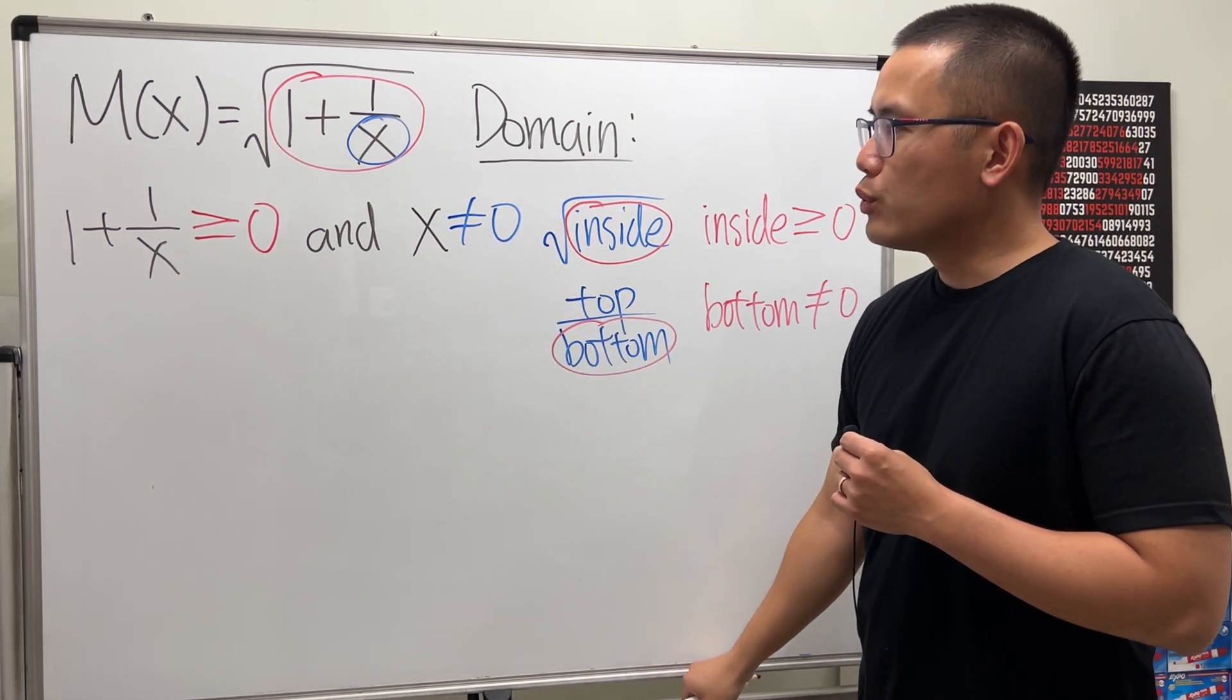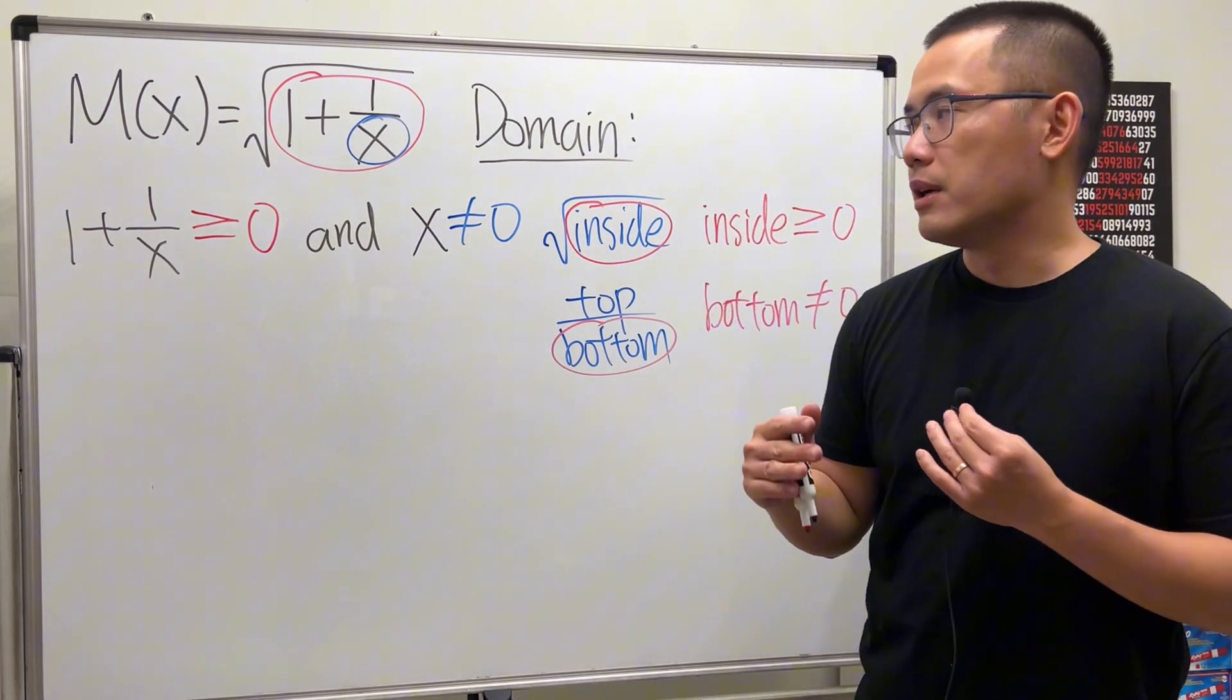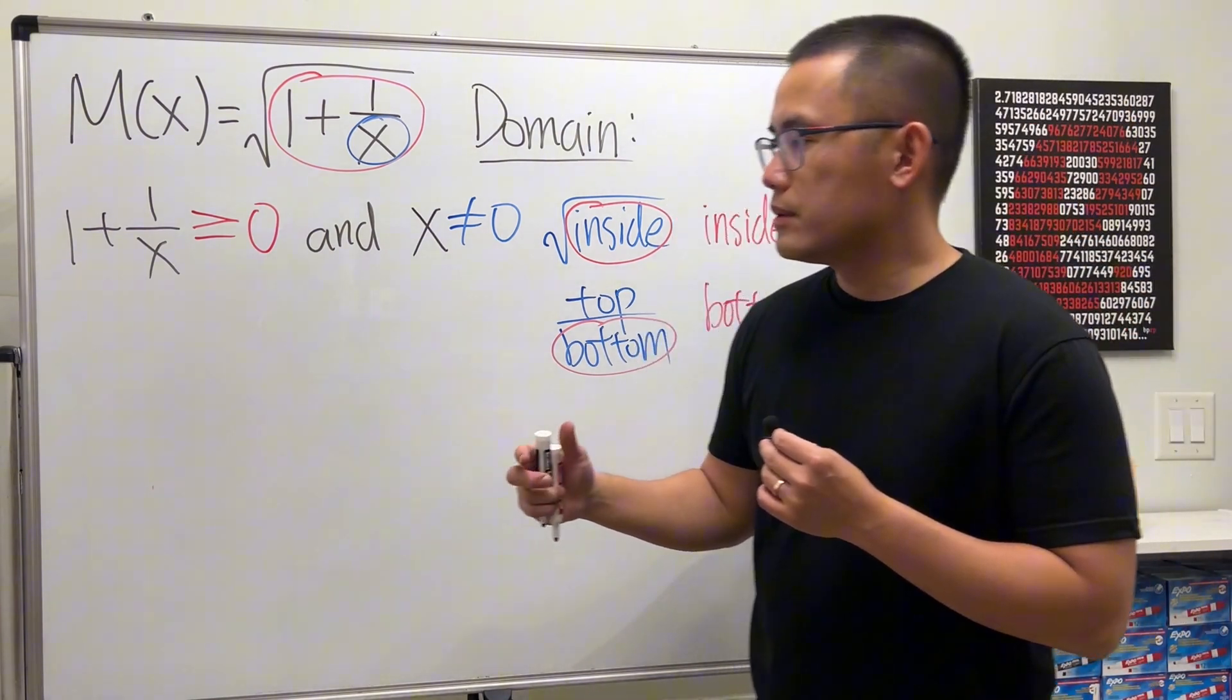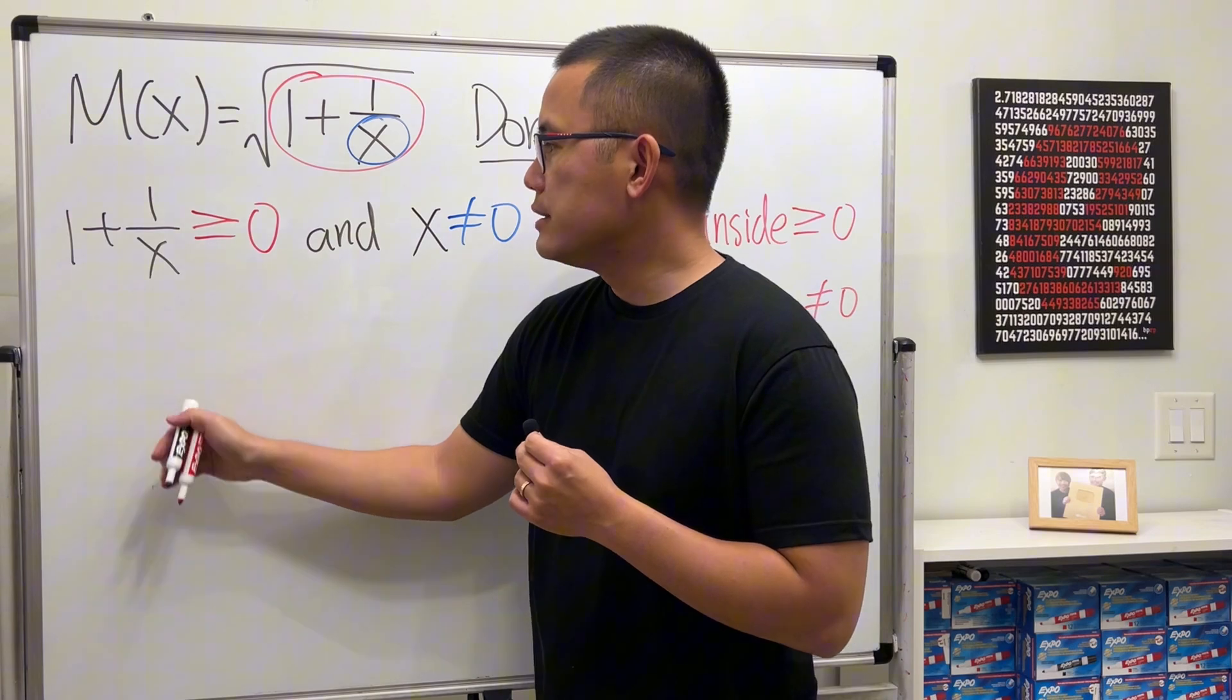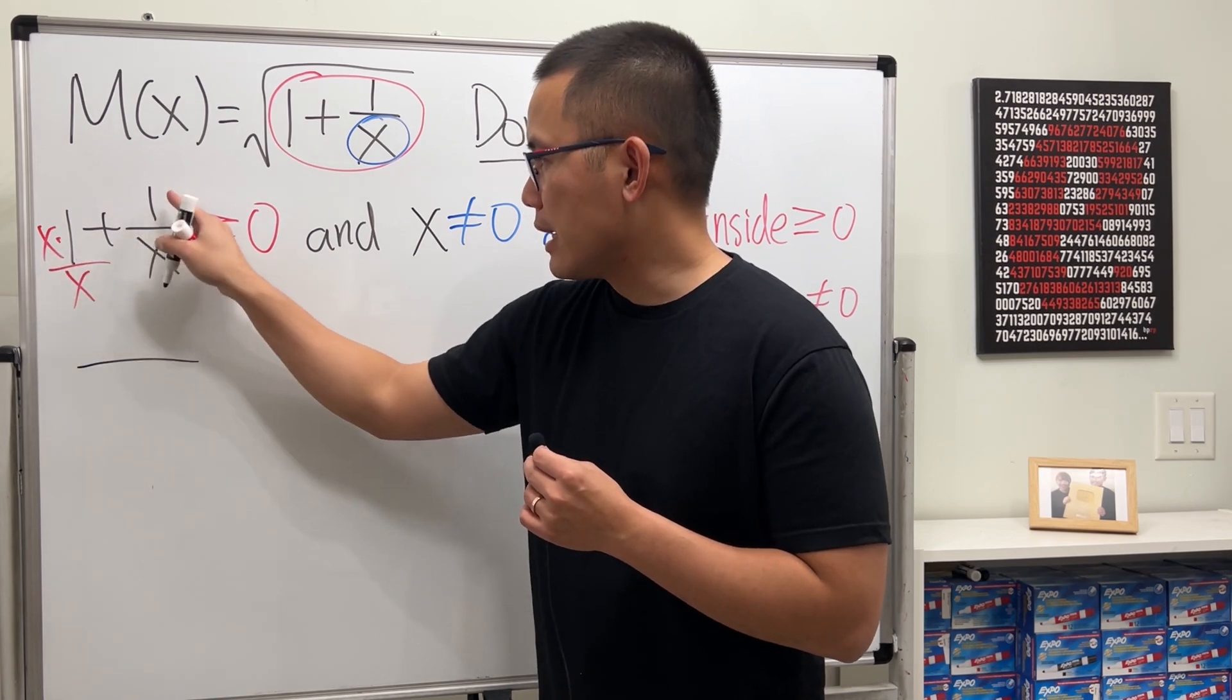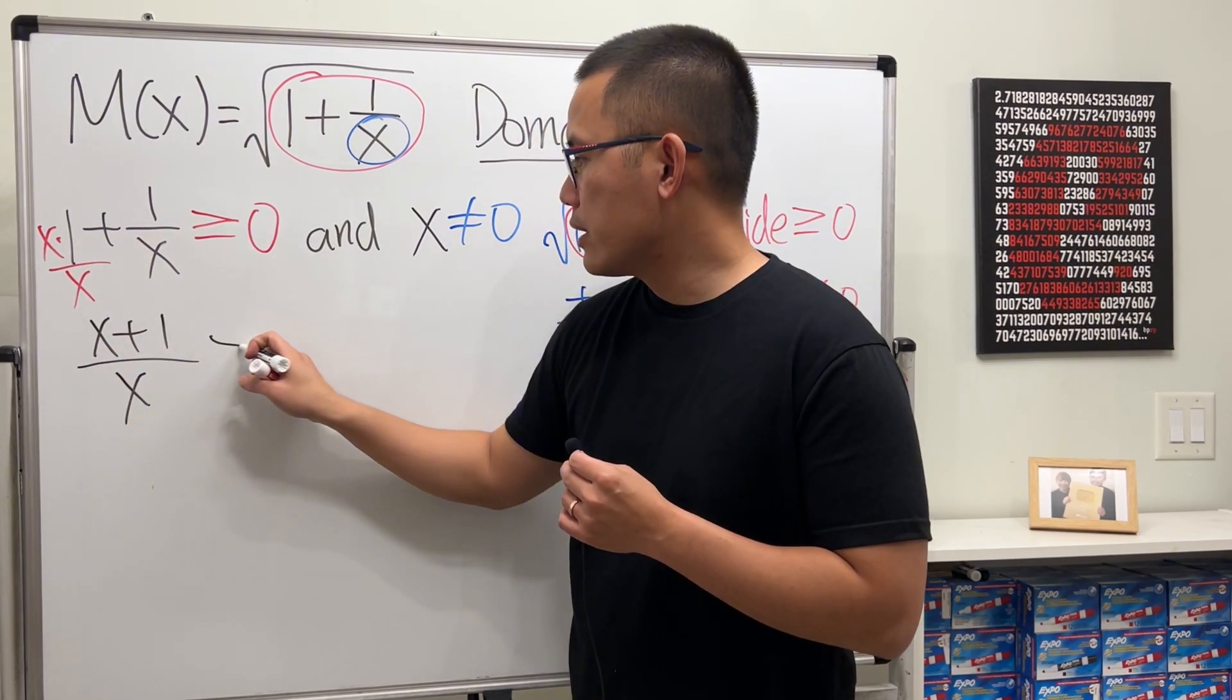And now we just have to work out these two inequalities, and then that will give us the domain. To do that, let's just combine the fractions. Here, let me just get x and x here. So altogether, we get x plus 1 over x, and that's greater than or equal to 0.